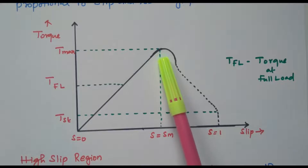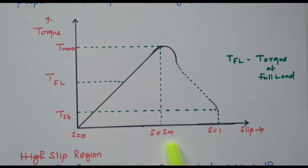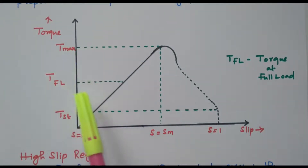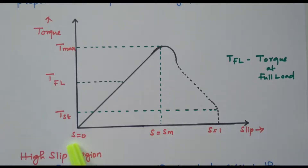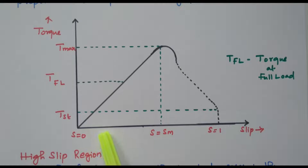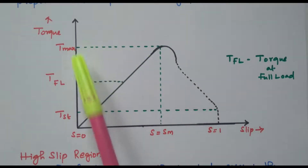At the maximum point, S equals S_M — the slip corresponding to maximum torque. This is the maximum torque, T_max. Approximately half of this is the full load torque, T_FL. So S equal to 0 means torque and slip are both 0, and the curve starts at 0. During the low slip region, slip increases and torque also increases, giving a straight line up to the maximum point — maximum torque at the corresponding slip value.